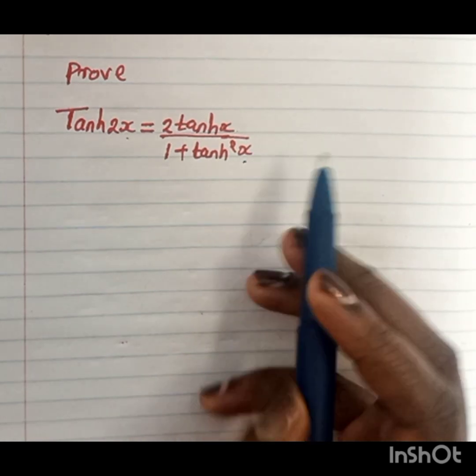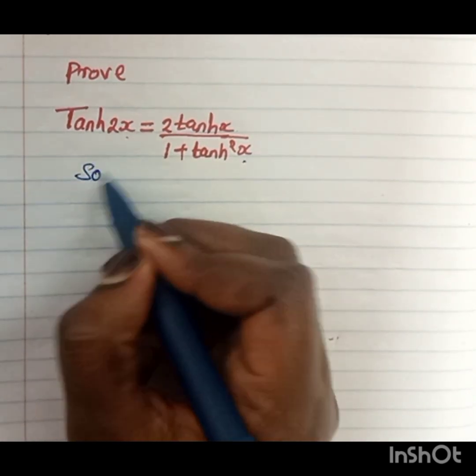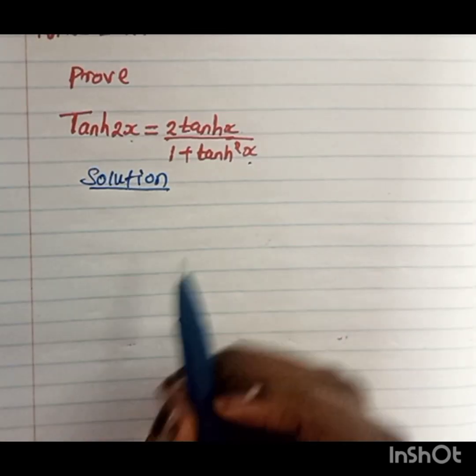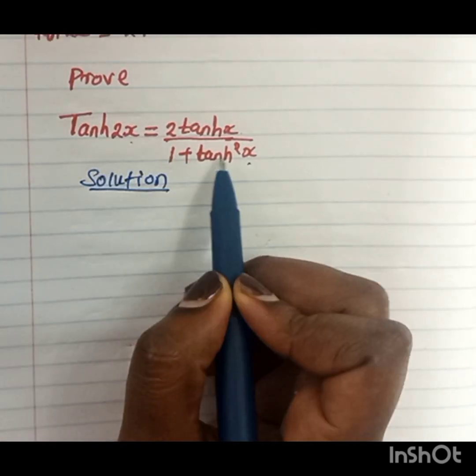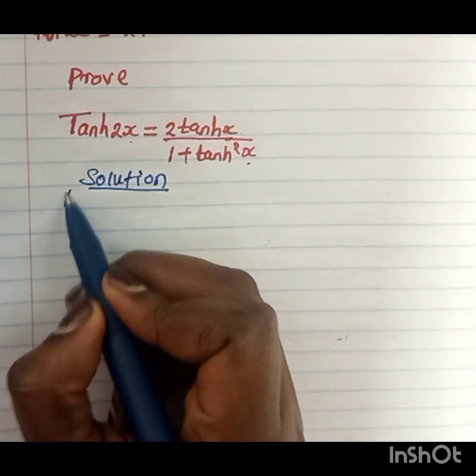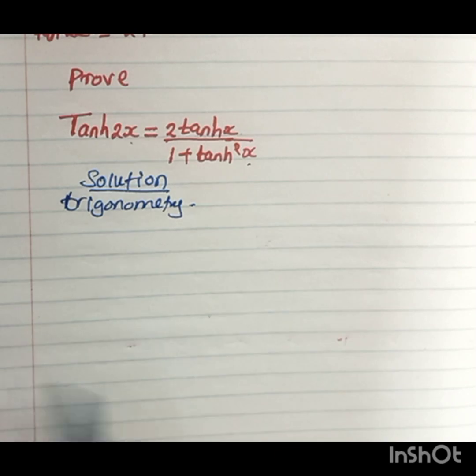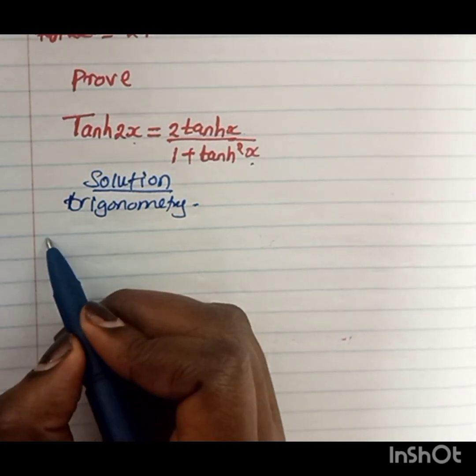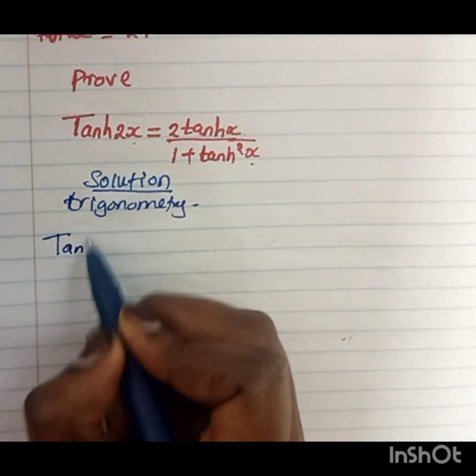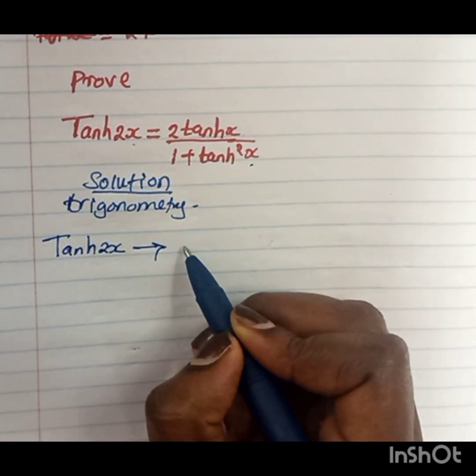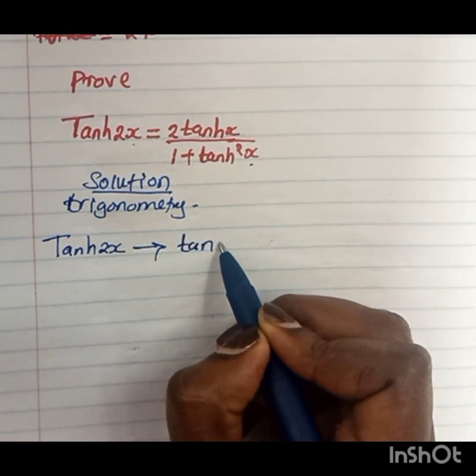As usual, let us look at the solution. To prove any hyperbolic function, we can always start from trigonometry because we know that this tanh 2x in trigonometry is tan 2x.